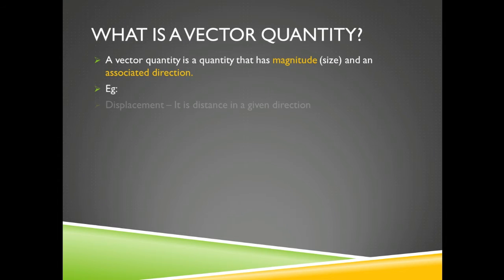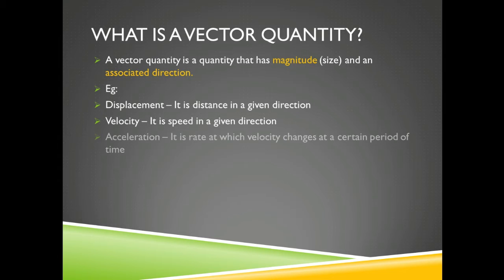Examples of vector quantities include displacement, velocity and acceleration. The biggest difference is that displacement is vector while distance is scalar. Velocity is speed in a given direction. Acceleration is the rate at which speed changes at a certain period of time.